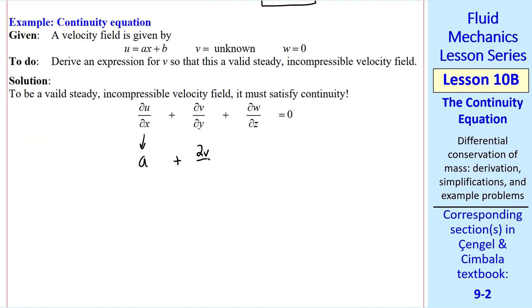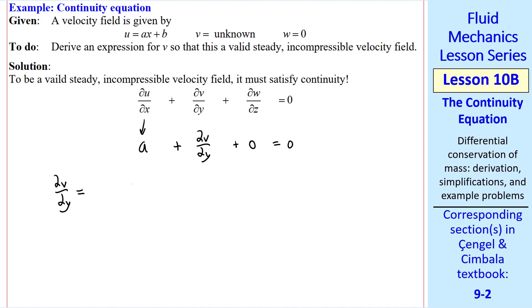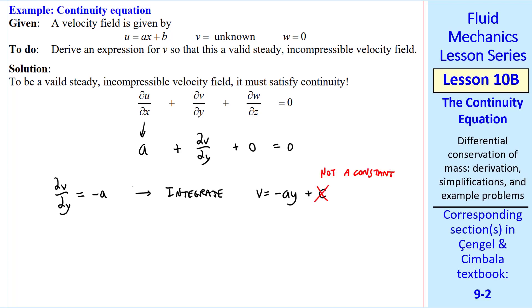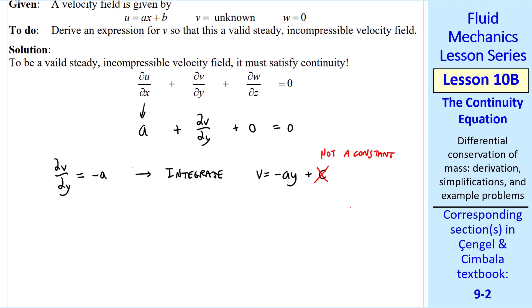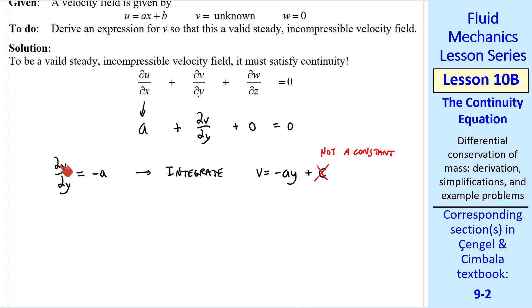Taking our partial derivatives, del u del x is a, we'll leave del v del y as is, and del w del z is 0. So our equation becomes del v del y equal negative a, which we can integrate, v equal negative a y, plus a constant. No, not a constant. Here's where students get tripped up. This is a partial derivative, and when we integrate, we don't add a constant, but rather a function of the other two variables.